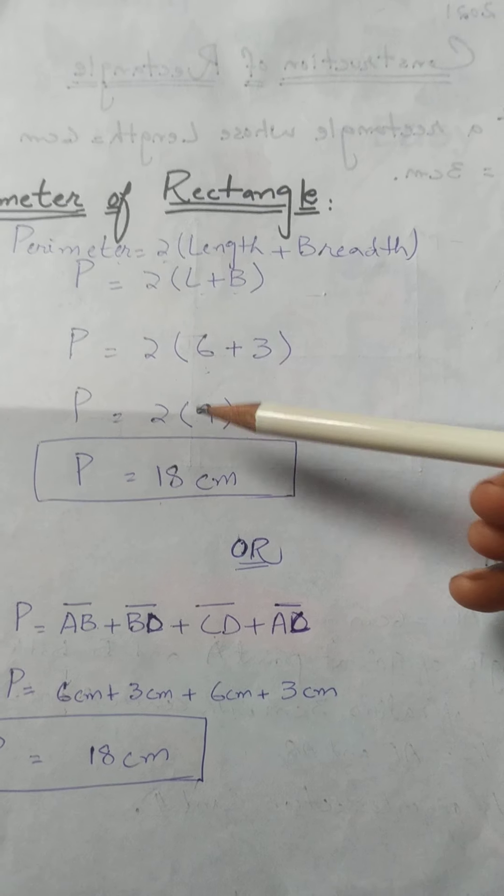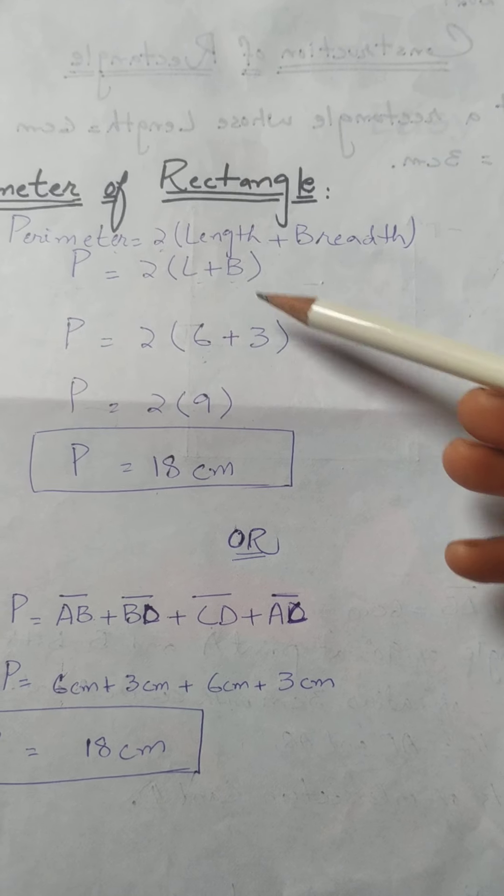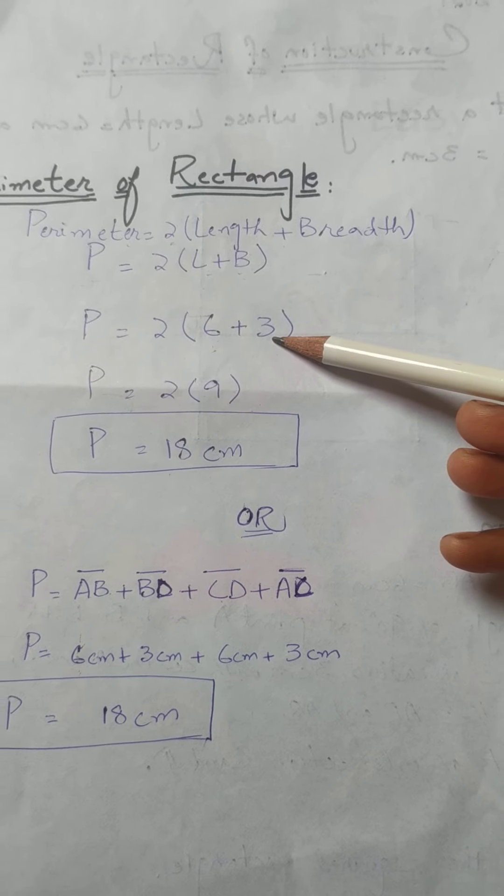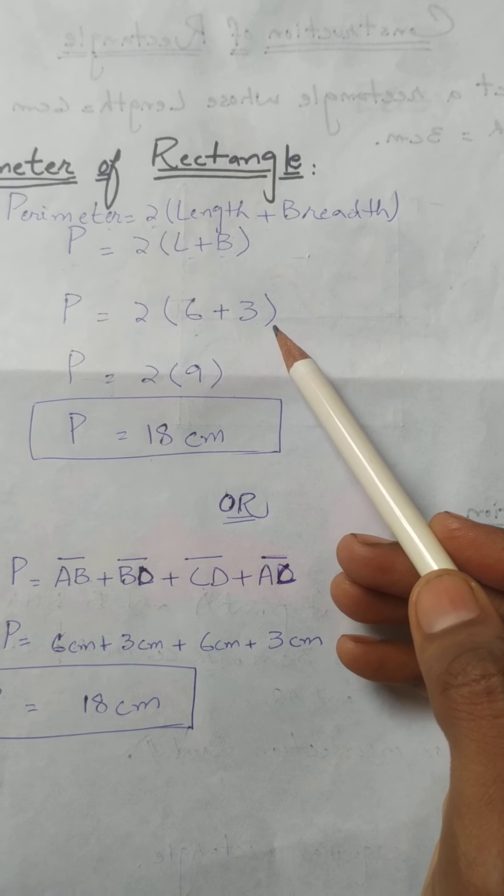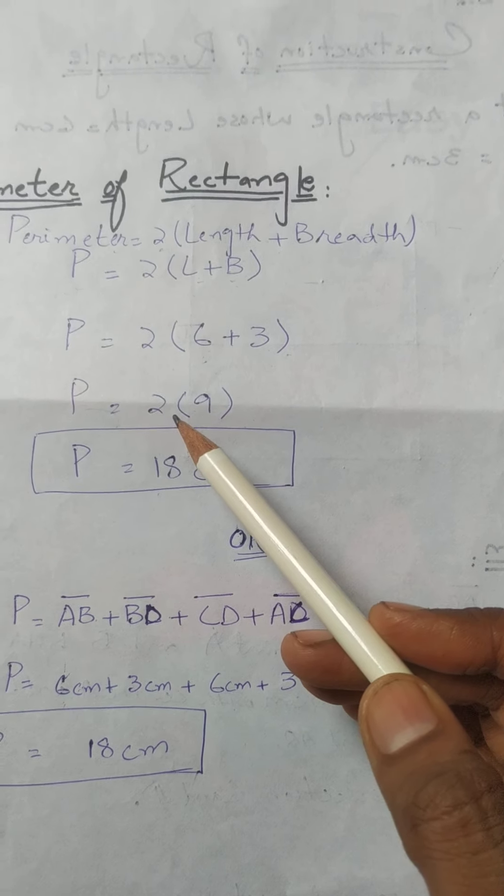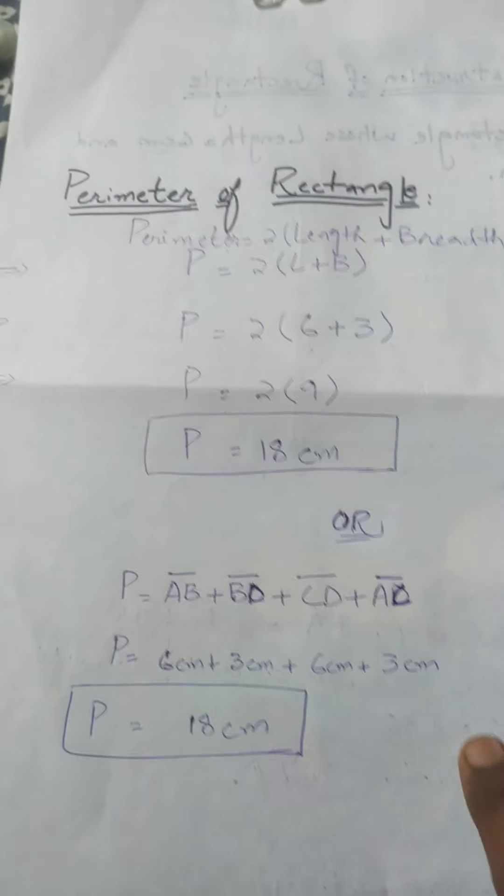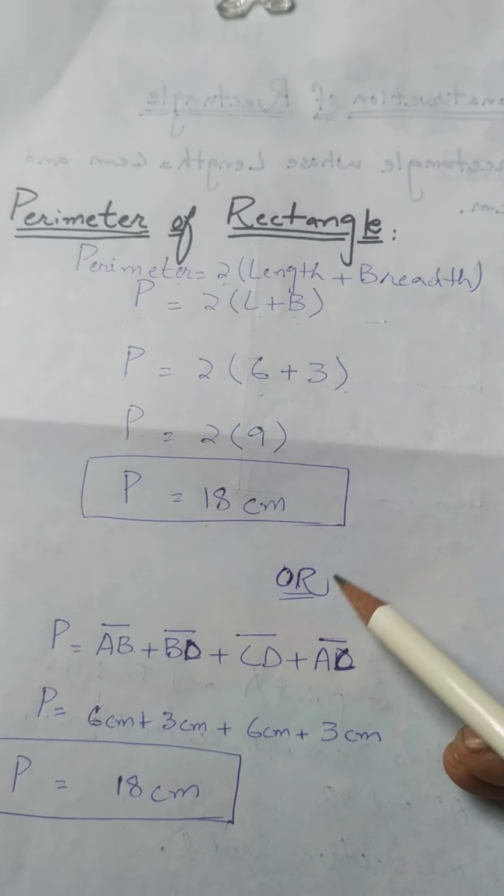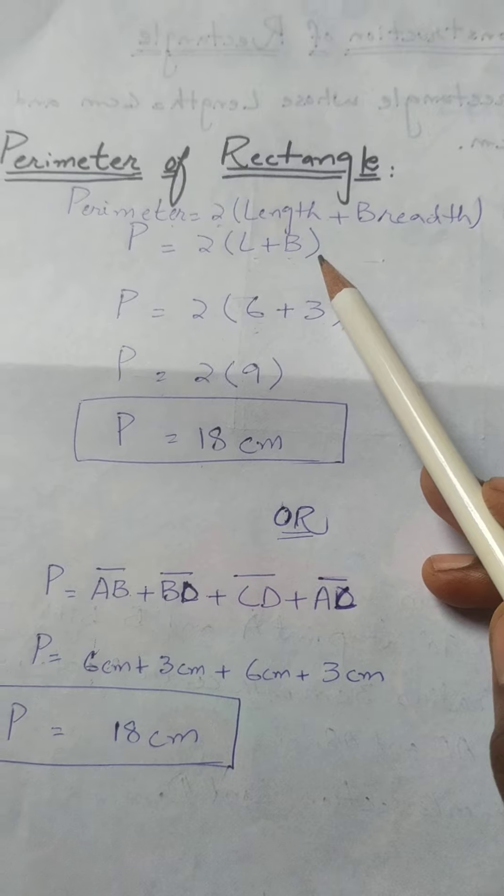We place the measurements: 6 + 3 = 9, then multiply by 2. Two times 9 is 18 cm. This is how we find the perimeter of a rectangle with this formula.